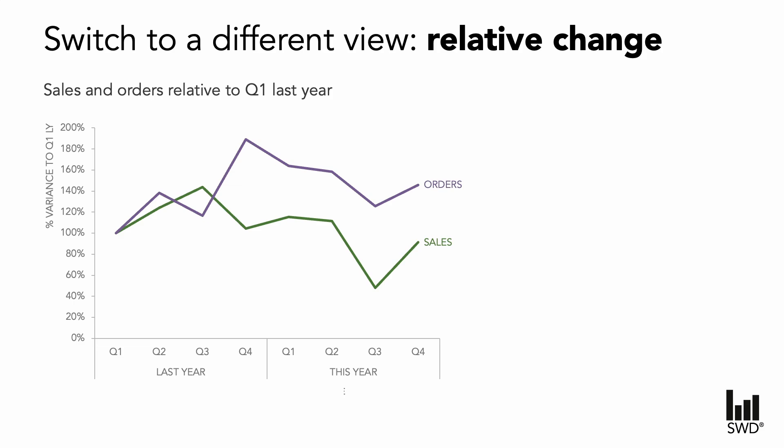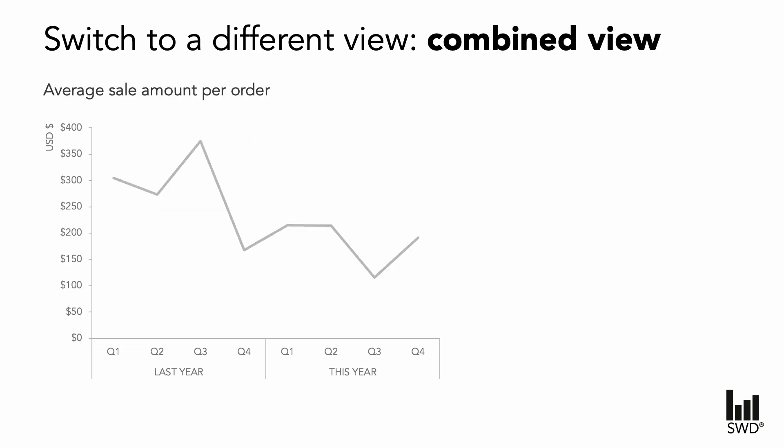Perhaps we don't need two individual lines and we can think about showing one metric as a proportion of another. In this case we've taken the opportunity to calculate the sales amount per order for each month. With this view we have the clearest sense yet of the decreasing trend, which indicates that even though the number of orders remain consistent, the value of those orders is decreasing.